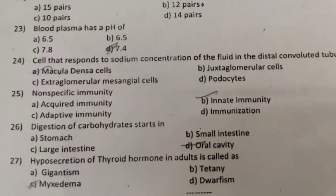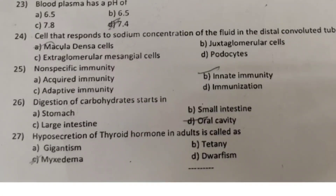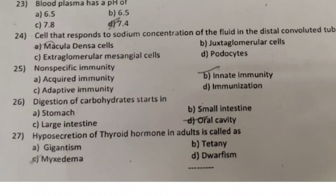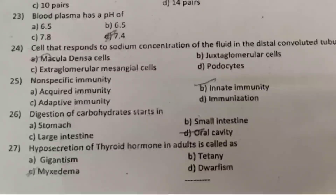Question 27: Hyposecretion of thyroid hormone in adults is called: A. gigantism, B. tetany, C. myxedema, D. dwarfism. Hope this video is clear for you all.